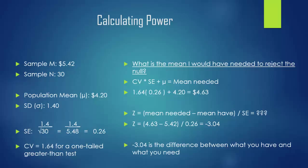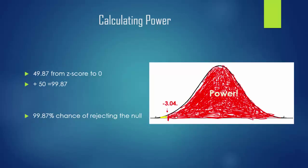If you look on a z-table, you will find that 3.04 is 49.87 from the z-score of 3.04 to 0. That's just one half of the scale, though. And so you want to make sure that you add 50 for the other 50% onto it. That gives you a total percent of 99.87, or a 99.87% chance of rejecting the null.